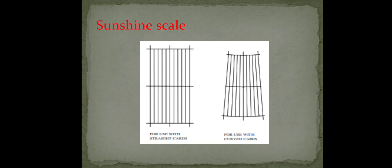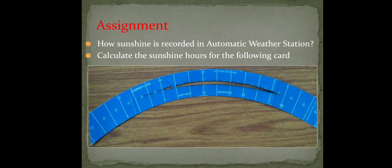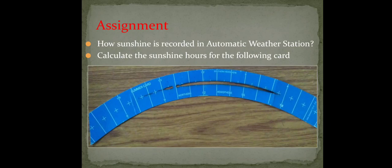That is how sunshine hours are recorded. What we have discussed is the manual method, where you have to come before sunrise or after sunset to replace the card every day and measure on your own how long the sunshine was there. The assignment questions are: first, how is sunshine recorded in an automatic weather station? Second, a burned card is given — calculate the sunshine hours for that card. Even without a scale you can approximate at least in whole hours how long sunshine was available.